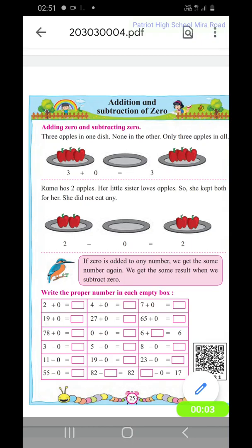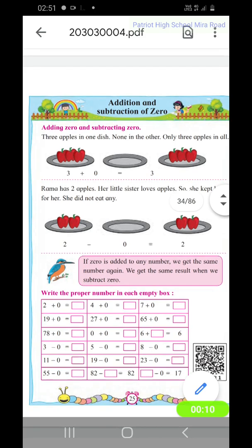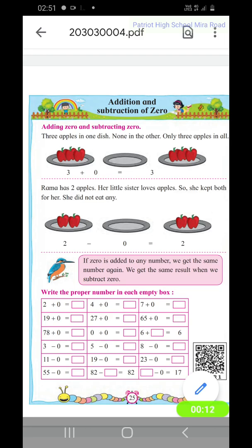Addition and subtraction of zero. In the first place we have three apples, so we write three. In the first place we have three apples, we write three over here. So three, one two three, three apples, three plus no apples over there. In the second place there is not a single apple, so we write zero.